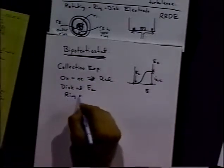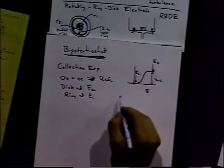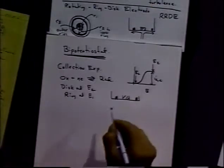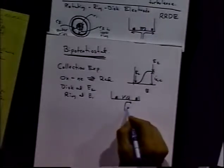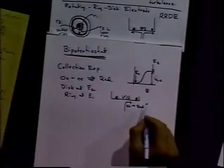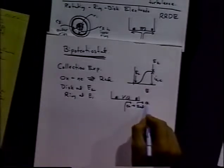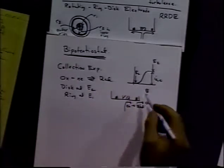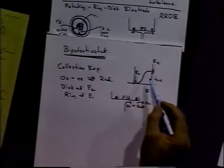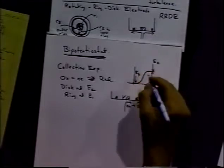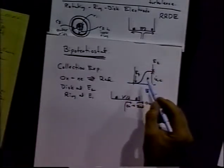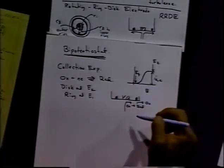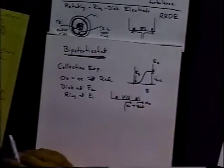So if we look at the electrochemistry going on, we have ox coming in to red. At the disc, the red goes back to ox. What we're doing is making the reduced species transiently. As that reduced species sweeps past the ring, because we're setting the ring at E1, that's a potential at which we can re-oxidize the reduced molecule. We'll get an anodic current by setting the potential there.